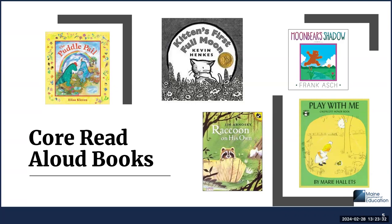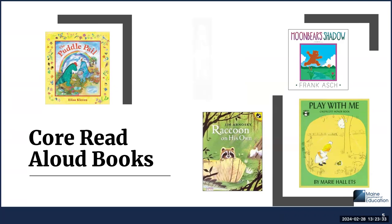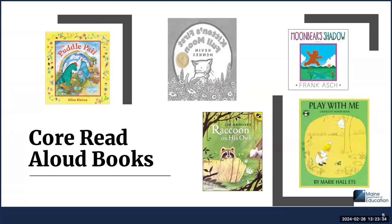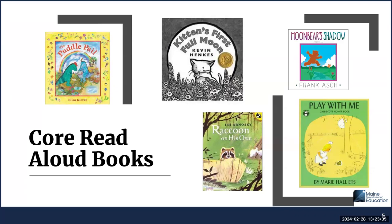The third story introduced is Kitten's First Full Moon. In this story, Kitten sees her first full moon and mistakes it for a bowl of milk. You will talk about the actions that Kitten takes trying to get to the milk, her feelings, and the reflections in the water.